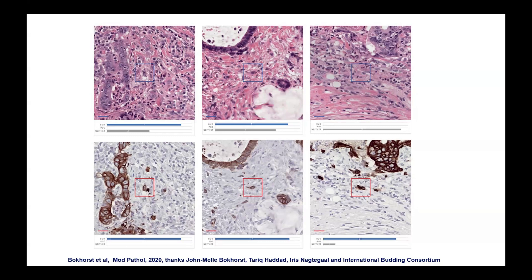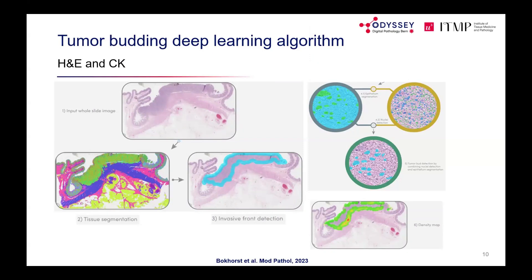Regarding whether an AI could be trained on IHC and applied to H&E: algorithms were developed separately for H&E and cytokeratin. A potential approach is using cytokeratin detections as ground truth for H&E, though IHC introduces its own artefacts that H&E does not have, making it a balance between advantages of each modality.